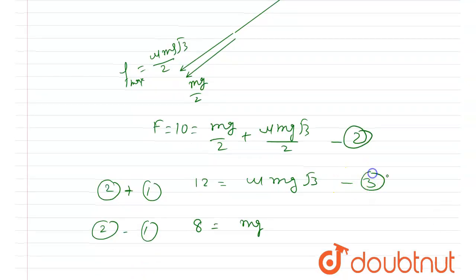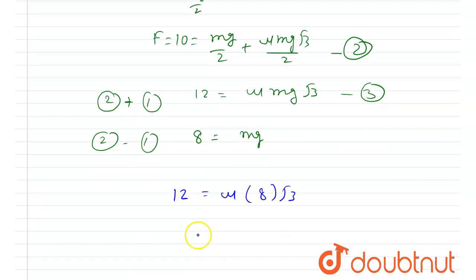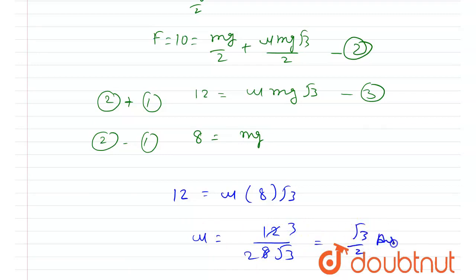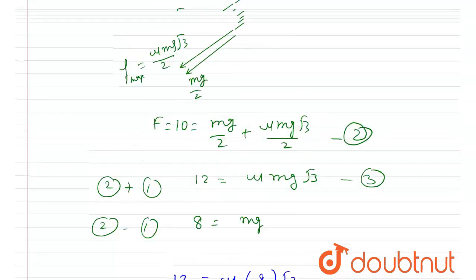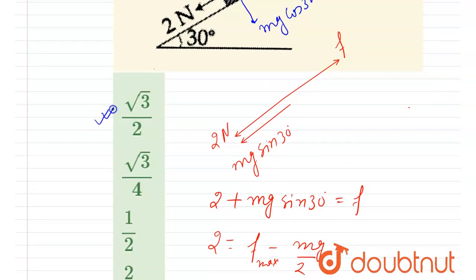Now putting mg = 8 into the addition result: 12 = μ × 8√3. So μ = 12 / (8√3) = 3/(2√3) = √3/2. Therefore μ = √3/2, and the correct option is A.